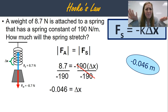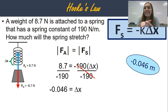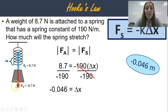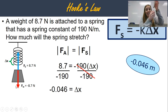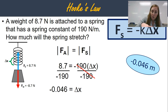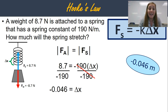You might be saying, how do you have a negative distance? Keep in mind that this is a vector — it's distance and direction, it's a displacement. Our spring was displaced in the down direction, so it was displaced 0.046 meters down. That's what that negative means.